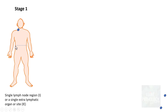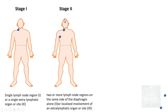This line indicates the level of the diaphragm. Stage two is involvement of two or more lymph node regions — in this case the cervical and axillary lymph nodes — but note that these lymph node regions are on the same side of the diaphragm. That is very important. It can also include localized involvement of an extra-lymphatic organ or site, in which case it is called Stage 2E.